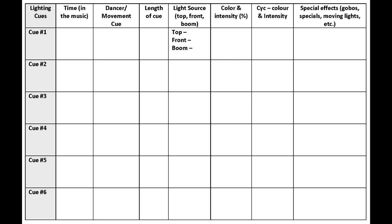Students in Composition 35 are asked to use between 8 and 12 cues. However, there is some flexibility there. The quality and purpose of the cues is much more important than the quantity.